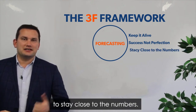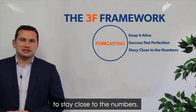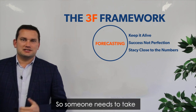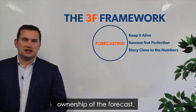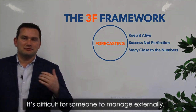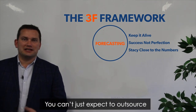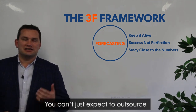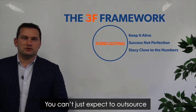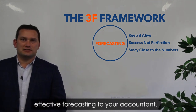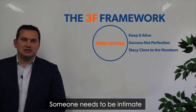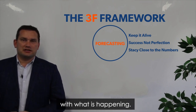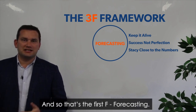The third golden rule is to stay close to the numbers. Someone needs to take ownership of the forecast — it's difficult to manage externally. You can't just expect to outsource effective forecasting to your accountant; someone needs to be intimate with what is happening. That's the first step: Forecasting.